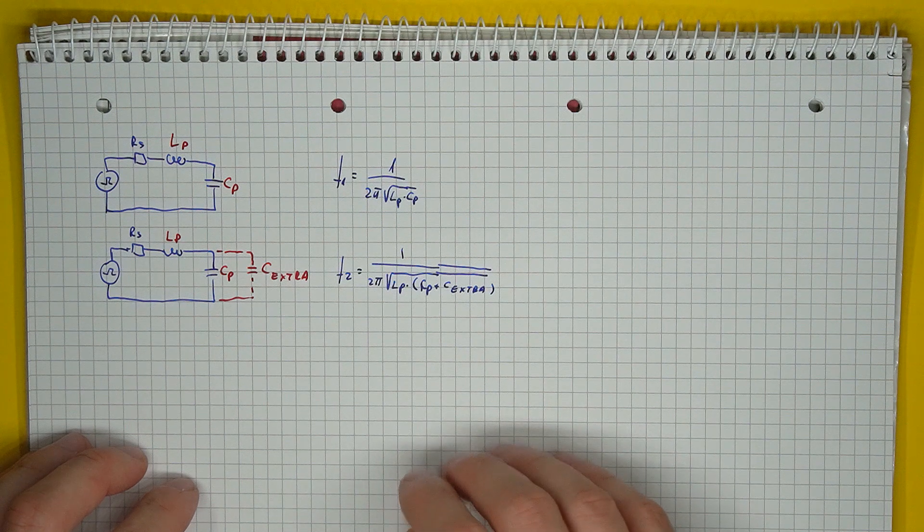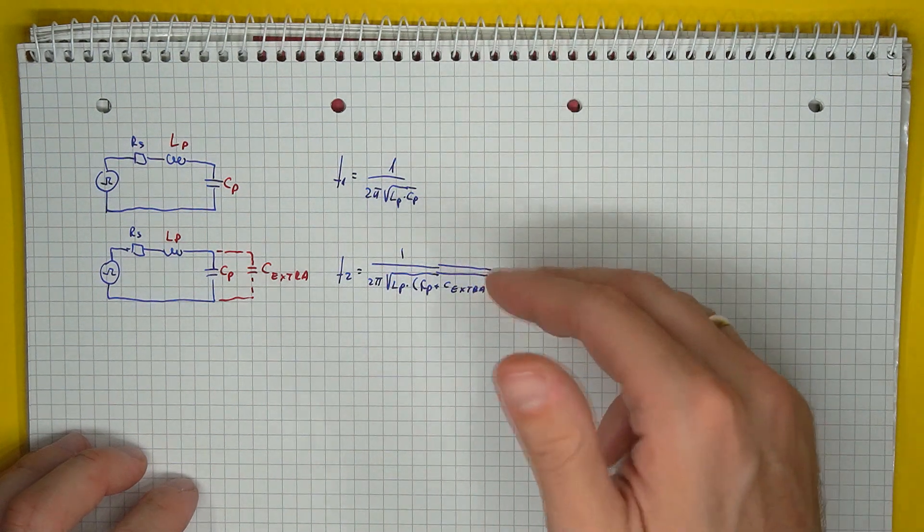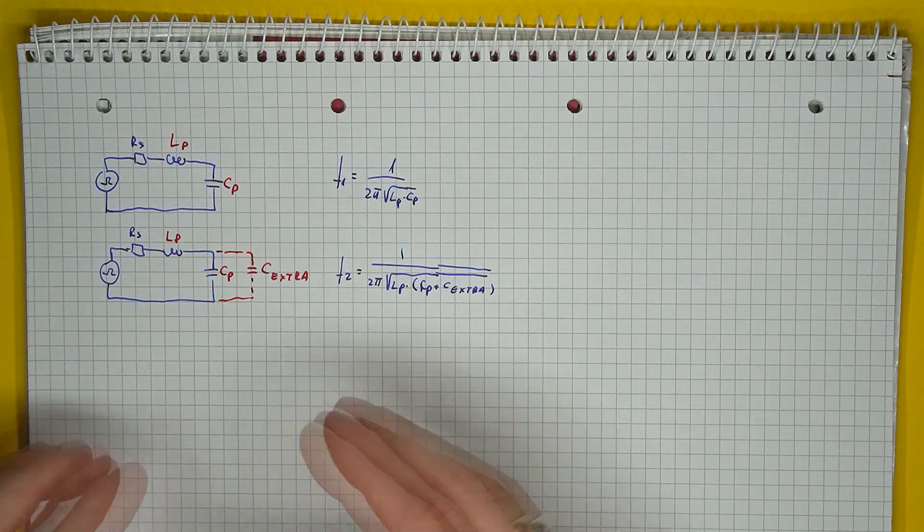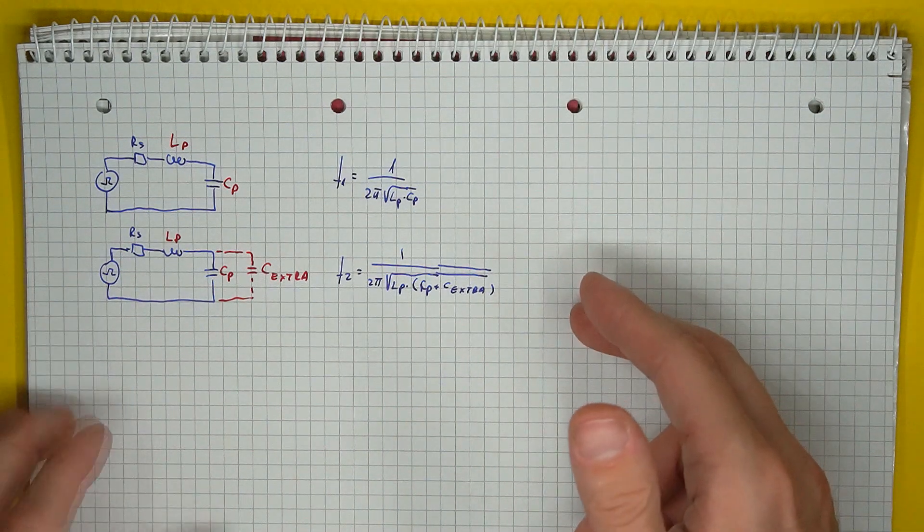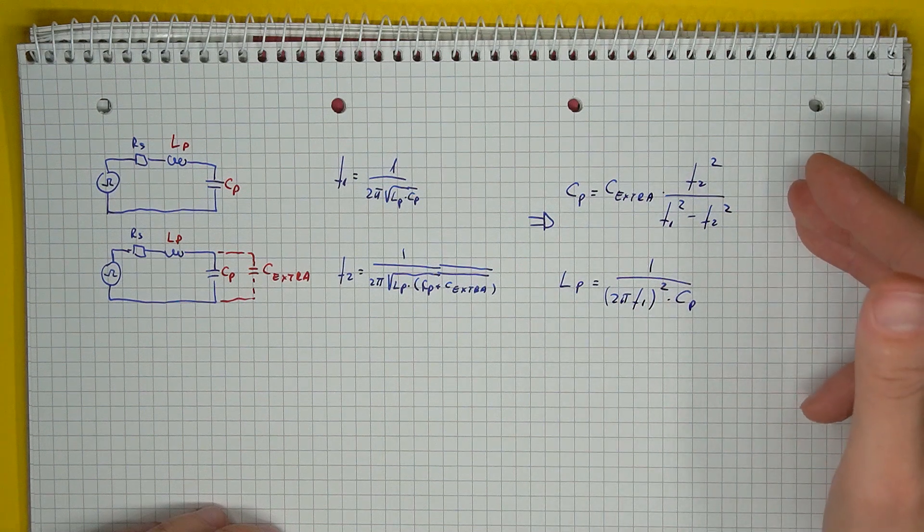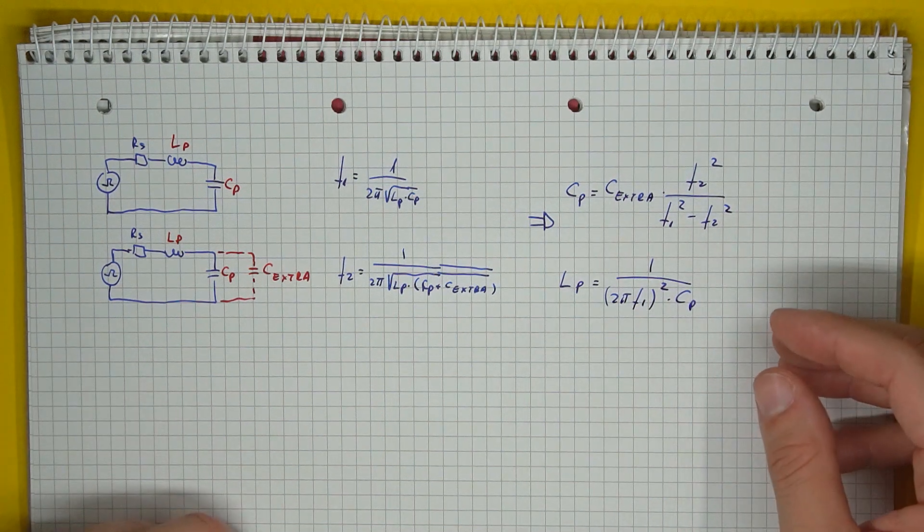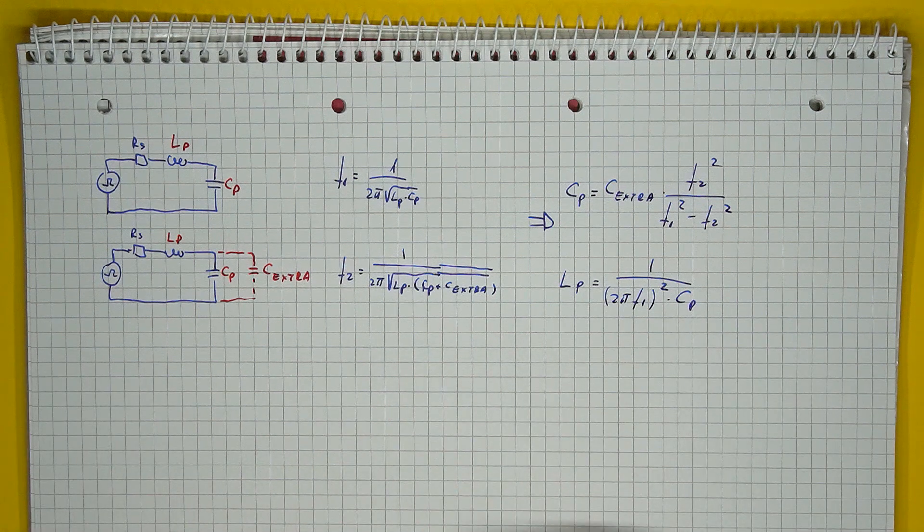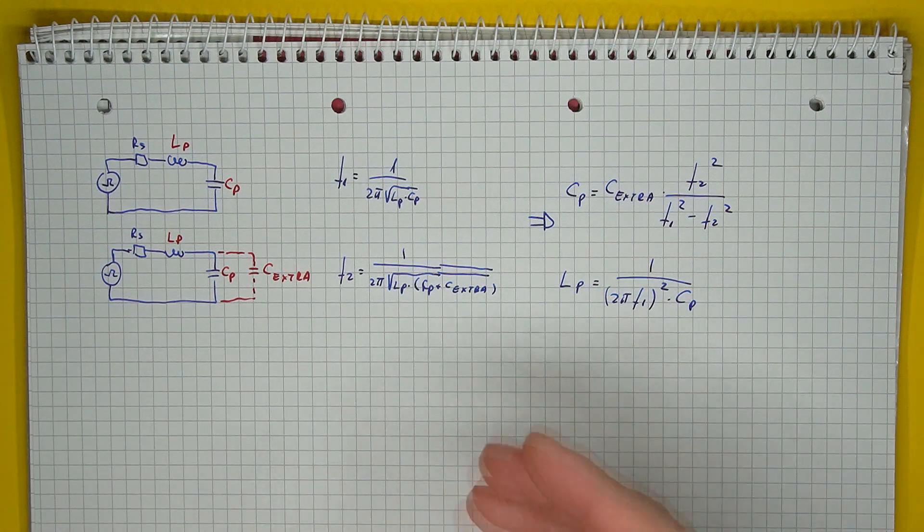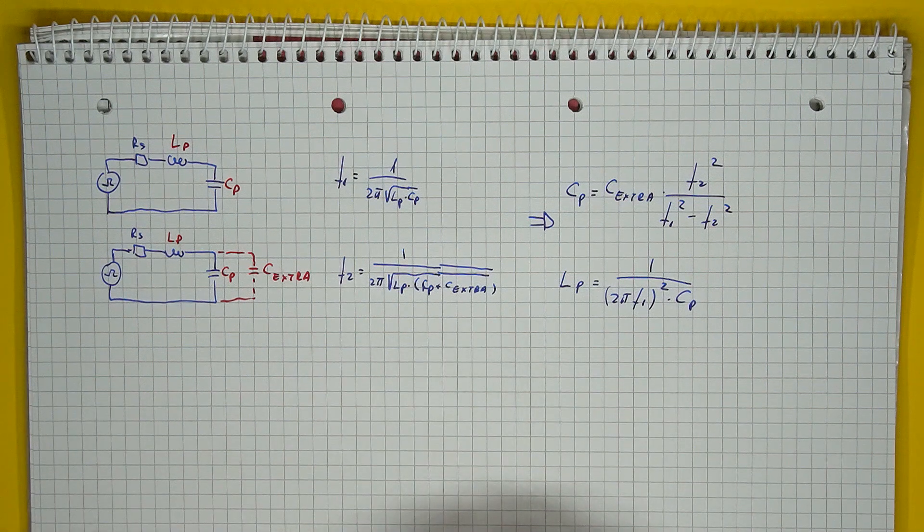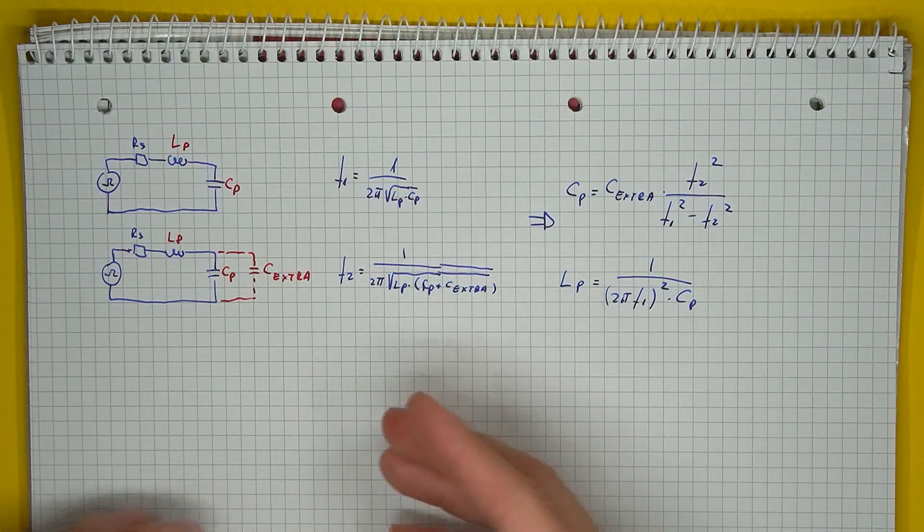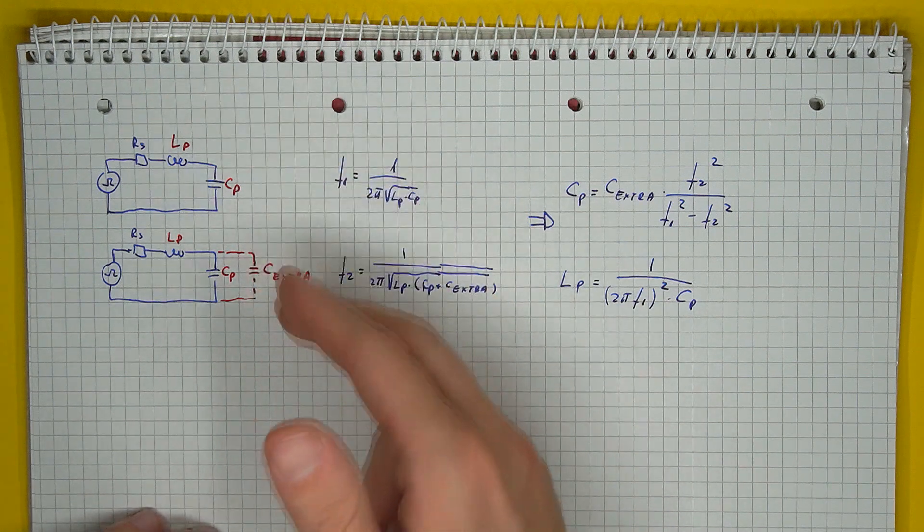The general idea here is to measure the resonance frequency without and with adding some extra capacitance. So an extra physical capacitor from the switching node normally to ground. Based on the two resonance frequencies that are observed, as well as the known value of the extra capacitance, you can determine the initial parasitic capacitance and from there the initial parasitic inductance. Depending on the measurement method, you may also need to keep in mind the added measurement capacitance.